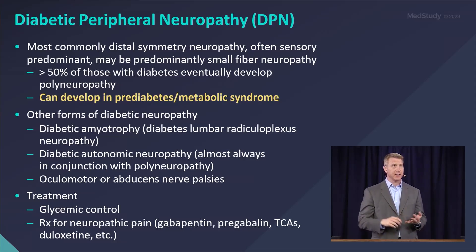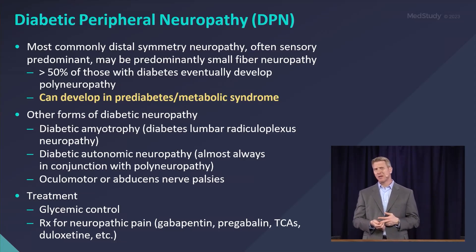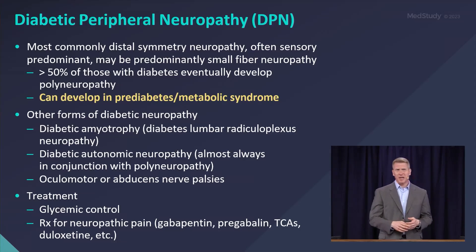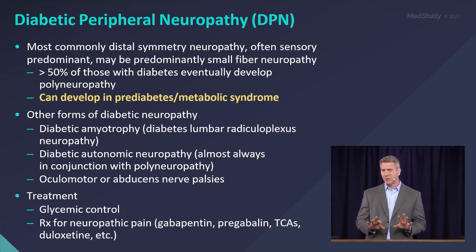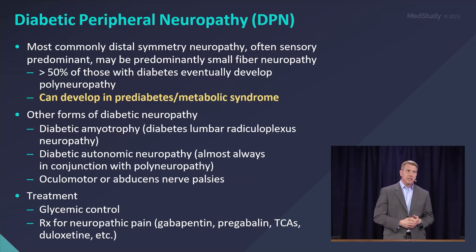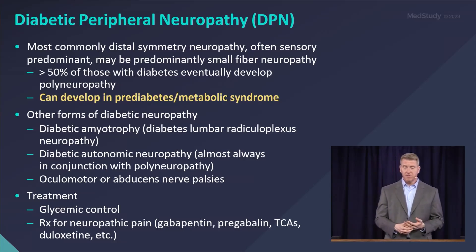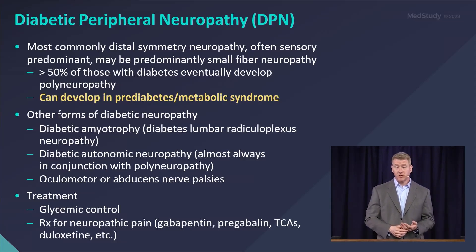It starts very gradually — patients can't really date when it started, and it slowly gets worse over time. It involves sensory nerves more than motor nerves. It's rare for them to have much weakness; they may have slight distal weakness with toe movements or standing on their heels, but it's predominantly sensory symptoms. It's fairly prevalent: more than 50% of patients with long-standing diabetes can develop neuropathy.